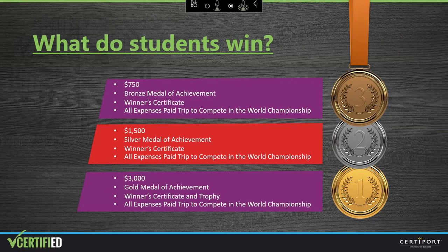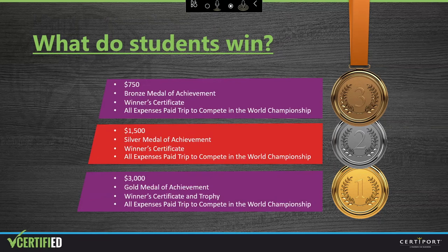Just like the MOS U.S. National Championship, the Adobe students have the opportunity to win some big prizes. The third place Adobe Certified Associate U.S. National Champion wins $750, a bronze medal of achievement, a winner's certificate, and an all-expenses-paid trip to the World Championship. The second place winner wins $1,500, a silver medal of achievement, a winner's certificate, and an all-expenses-paid trip to the World Championship. The first place winner wins $3,000, a gold medal of achievement, a winner's certificate, a trophy, and an all-expenses-paid trip to the World Championship. All three place winners advance to the World Championship.